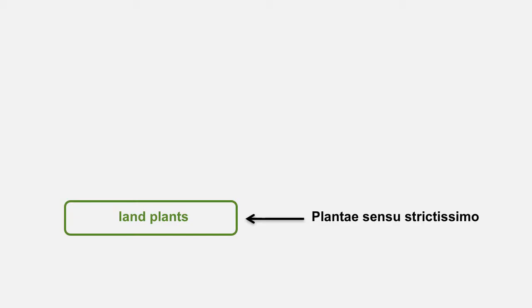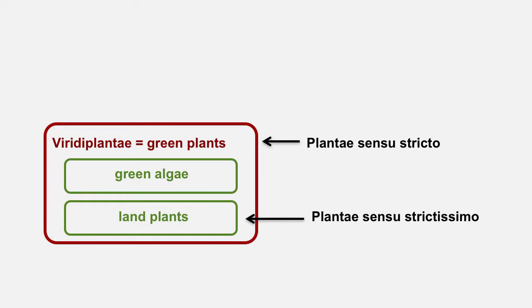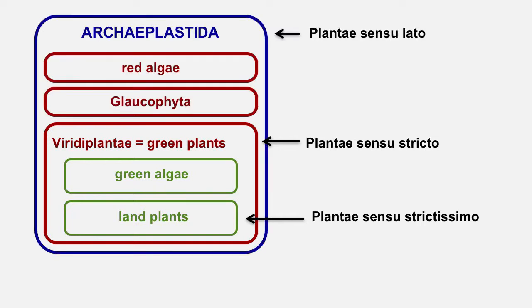When it comes to plants, there's some disagreement over which groups should be counted as plants and which ones shouldn't — in other words, which organismal groups should be called plantae. In the narrowest sense, sensu strictissimo, the kingdom plantae is equated with the group called land plants. In the narrow sense, sensu strictu, plantae is equated with the viridiplantae, or the green plants, which is land plants plus green algae. And in the broad sense, sensu lato, plantae is taken to equal archaeplastida, which is green plants plus glaucophyte algae plus red algae. For the purpose of this video, I've selected this latter view, plantae sensu lato.